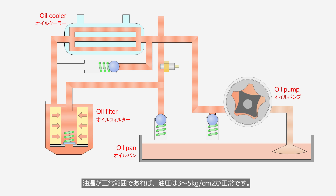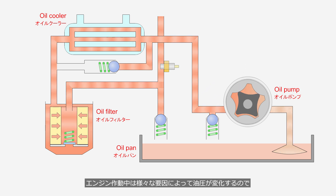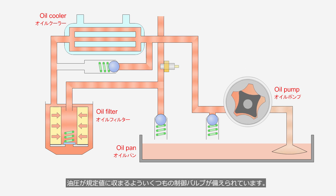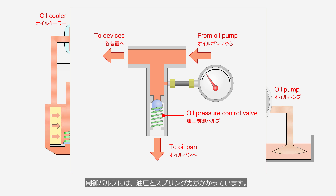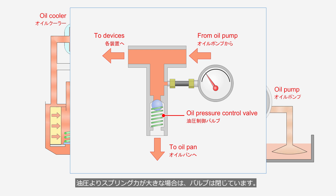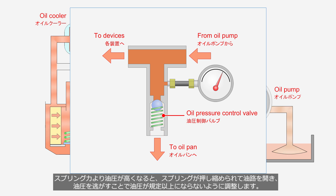When the oil temperature is within the normal range, an oil pressure of 3 to 5 kilograms per square centimeter is considered normal. Since oil pressure fluctuates due to various factors while the engine is running, several control valves are installed to maintain it within the specified range. The oil pressure control valve is regulated by the balance between spring force and oil pressure. When the spring force is greater than the oil pressure, the valve remains closed. When the oil pressure exceeds the spring force, the spring is compressed, opening the oil passage and relieving pressure to prevent it from exceeding the specified level.